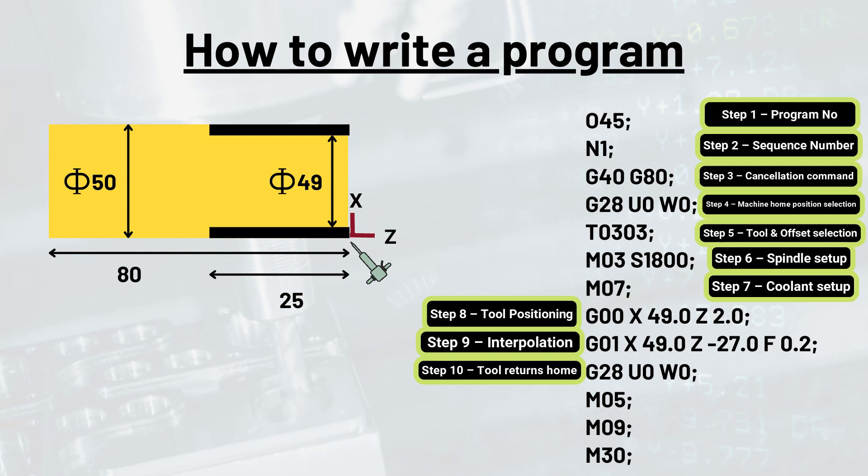In the next step, we are going to stop the spindle as well as the coolant, because we have got the desired outcome. We can now stop the spindle using M05 command followed by coolant by M09 command.